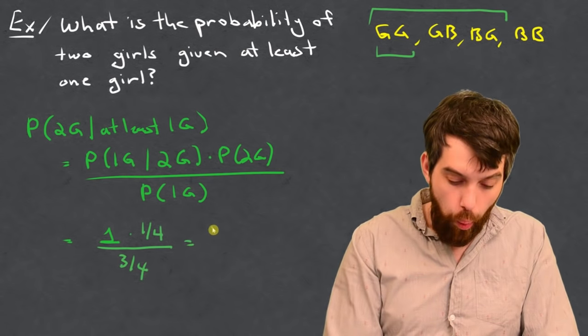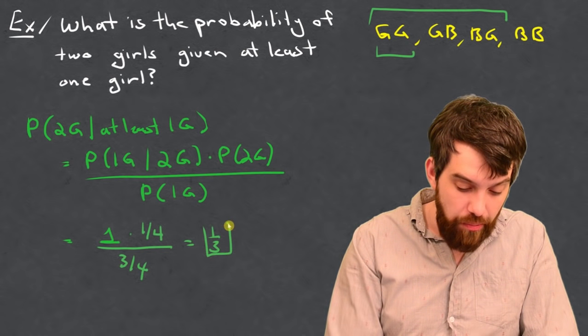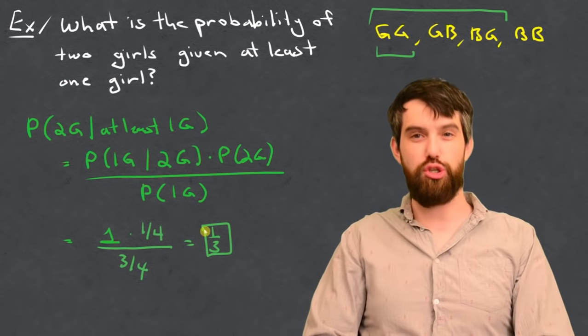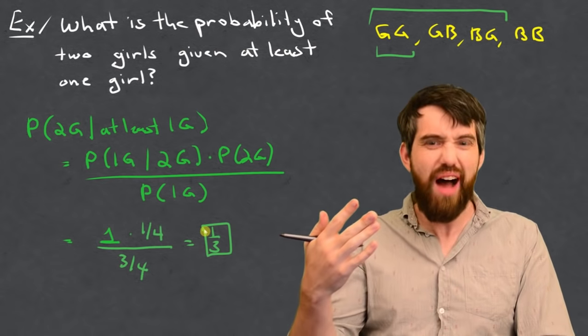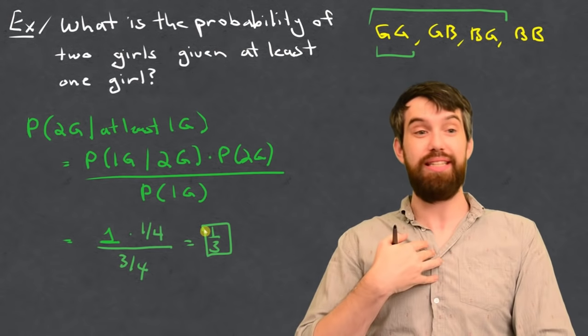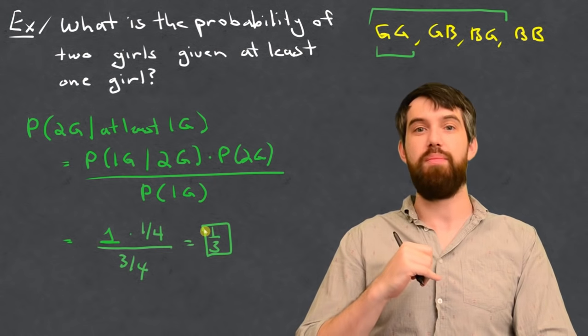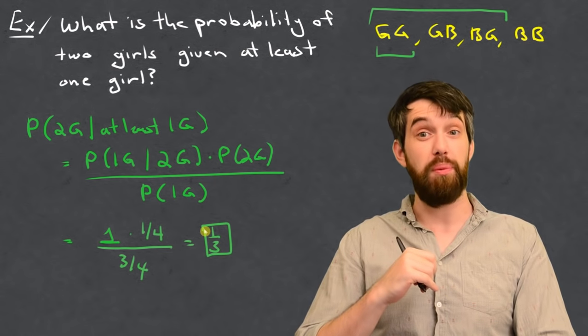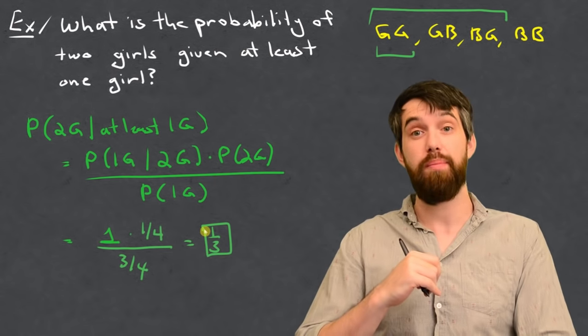In other words, we get one-third, which is the same value that we computed just by pure conditional probability, but we verified that it works using Bayes' theorem that illustrates at least some motivation that Bayes' theorem is likely going to be true, and useful, presumably, in other contexts beyond this.